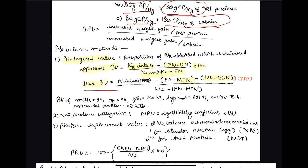Key biological value figures to remember: milk for humans is 94, egg is 96 (the highest), fish is 74–89, soya bean for animals is 63–76, maize is 49–81, and microbial protein is 68–78.